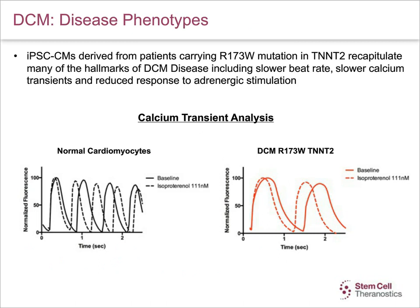This slide shows a comparison of calcium transients between normal cardiomyocytes and DCM cardiomyocytes. In the left panel, normalized fluorescence is measured as a function of time in normal cardiomyocytes; the continuous line is the baseline measurement and the dashed line represents isoproterenol treatment. DCM cardiomyocytes in the right panel show slower calcium transients and reduced response to adrenergic stimulation as compared to control cardiomyocytes.